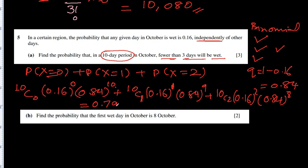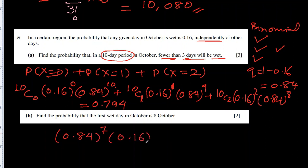Part b: find the probability that the first wet day in October is on the 8th of October. That means seven dry days followed by one wet day on day 8. This is geometric distribution: 0.84^7 times 0.16, giving 0.0472.